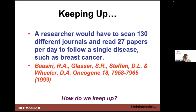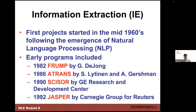If you were someone studying breast cancer, 25 years ago you would have had to read 27 papers per day and scan at least 130 different journals to stay current. Doubling those numbers for today, you'd have to scan 250 journals and read at least 50 papers per day. Nobody has time for that. This is a question a lot of us are asking: how do we keep up? One way is through information extraction. People started thinking about this even back in the 1960s, and open source tools started appearing in the eighties and nineties, including GATE, Apache OpenNLP, and the general NLTK.